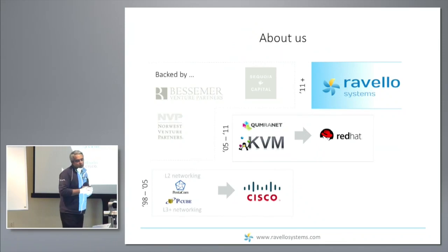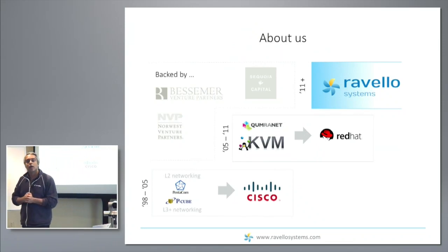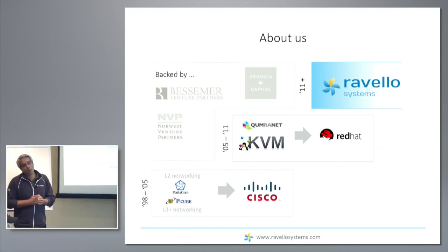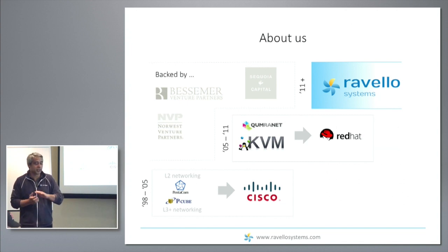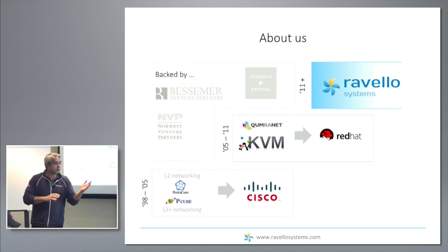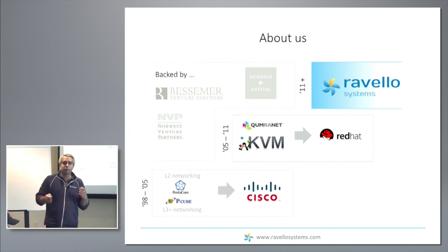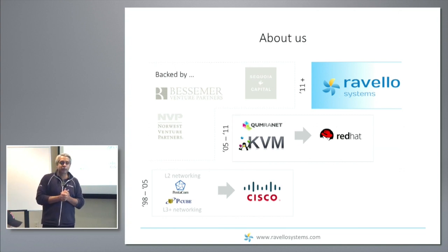I'll start by telling you a little bit about Ravello. The story goes back about a decade and a half. All of us were at Cisco together. My partners Benny Schneider and Rami Tamir had actually sold a couple of companies to Cisco — one of them was Pentacom, where they were doing layer two networking, specifically DPT, trying to do a 50-millisecond failover in a regional network.